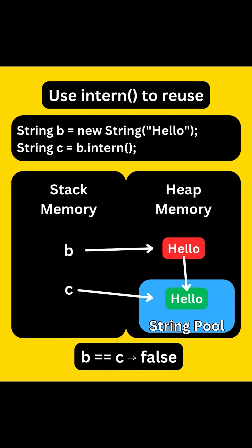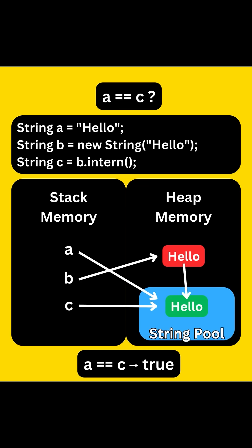But we can still force the new string into the pool using the intern() method. Now C points to the 'hello' in the pool, and since A was already pointing to the pooled 'hello', A == C is true. Both refer to the same interned string.